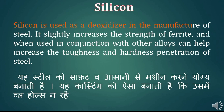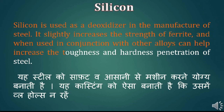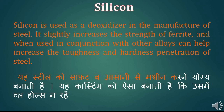Silicon is used as a deoxidizer in the manufacture of steel. It slightly increases the strength of ferrite and when used in conjunction with other alloys can help increase the toughness and hardness penetration of steel.